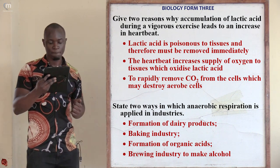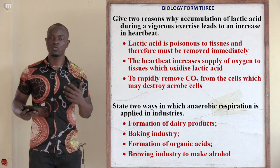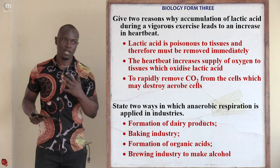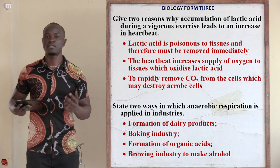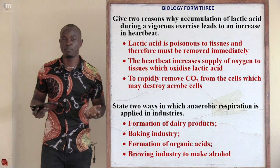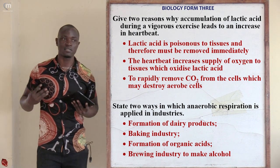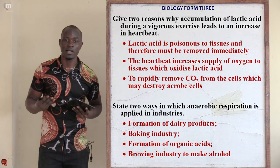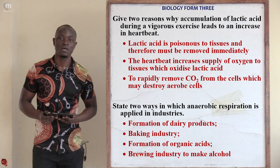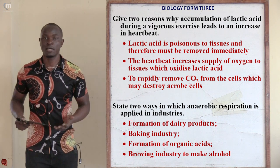Question twenty-three: state two ways anaerobic respiration is applied in industries. First, it is used in the baking industry to form bread, cakes, etc. Second, it is used in formation of different dairy products, for example yogurt. Third, in the formation of organic acids such as acetic acid and methanoic acid using symbiotic bacteria. Fourth, in alcohol manufacturing or brewing industries to form whiskey, alcohol, and other fermented beverages.